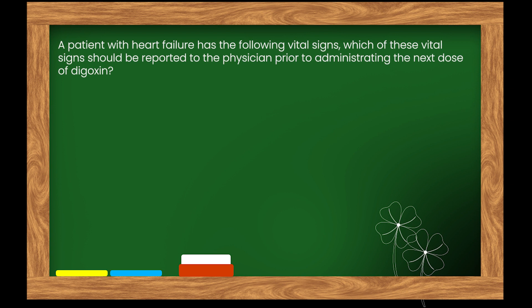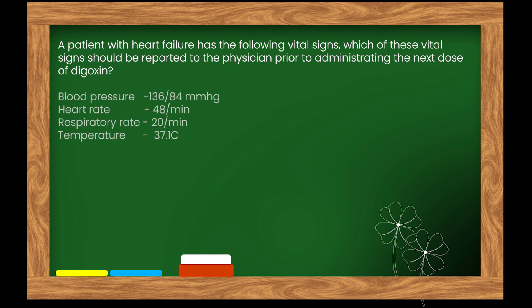Here is our next question. A patient with heart failure has the following vital signs — which should be reported to the physician prior to administering the next dose of digoxin? Blood pressure 136/84 mmHg, heart rate 48 per minute, respiratory rate 20 per minute, temperature 37.1°C. Options: A. Blood pressure. B. Pulse. C. Temperature. D. Respiratory rate.